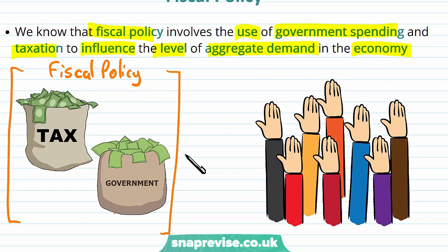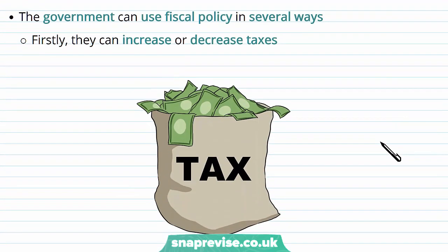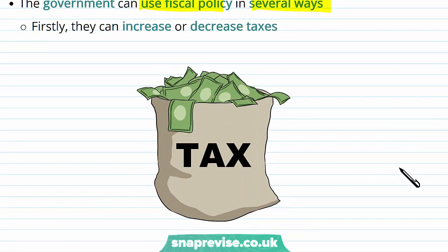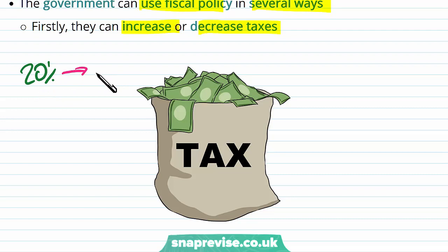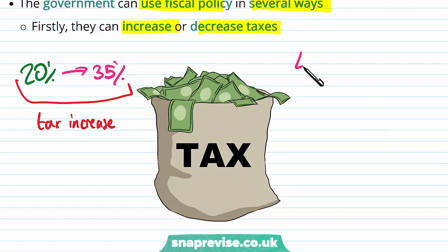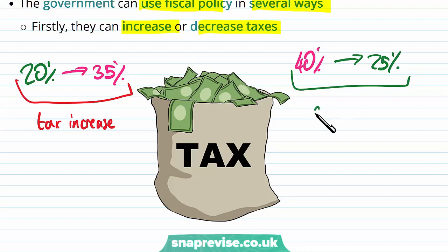The government will use fiscal policy to influence AD, or aggregate demand, in the economy. The government is able to use fiscal policy in many different ways. The first one to consider is either an increase or a decrease in tax. Suppose that initially the tax level was 20% and then there is an increase to 35% — this is seen as a tax rate increase. Alternatively, we could decrease tax from 40% down to 25%, which is known as a decrease in the tax rate.